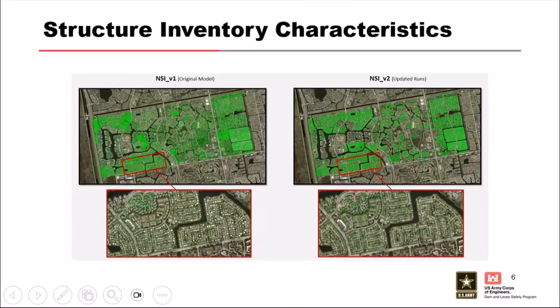Here's a key example — and you've been playing around with LifeSim examples the past few days. If you have an inventory like the one on the left where structures are placed in canals and whatnot, you're going to get bogus depths and velocities. You'll have elevated consequences for your economic losses just like you would for life loss. You really need to make sure whatever inventory you're bringing in accurately reflects what's actually at risk.